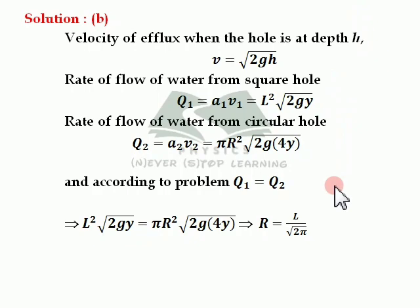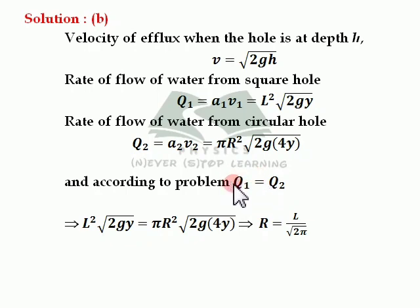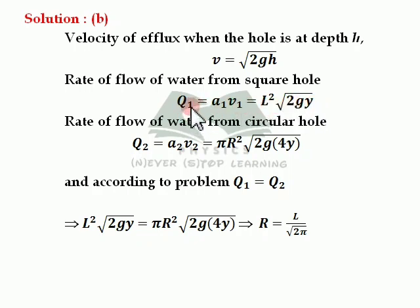Q1 equal to Q2. Q equal to area into velocity. For the square hole: Q1 equal to L square into root of 2gy, since the hole is at depth y. For the circular hole: Q2 equal to pi R square into root of 2g into 4y, since it is at depth 4y. So Q2 equal to pi R square into root of 8gy.